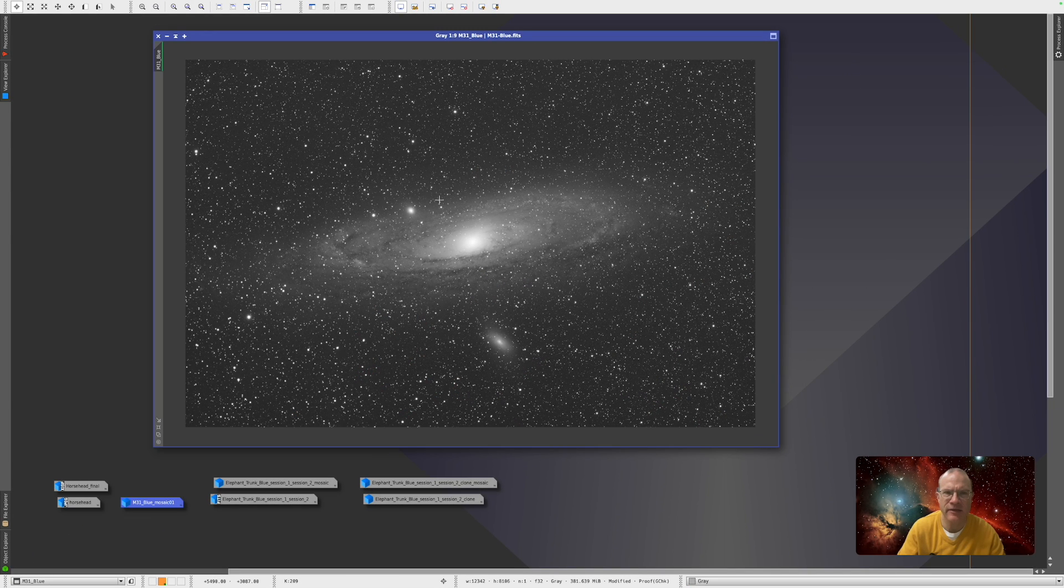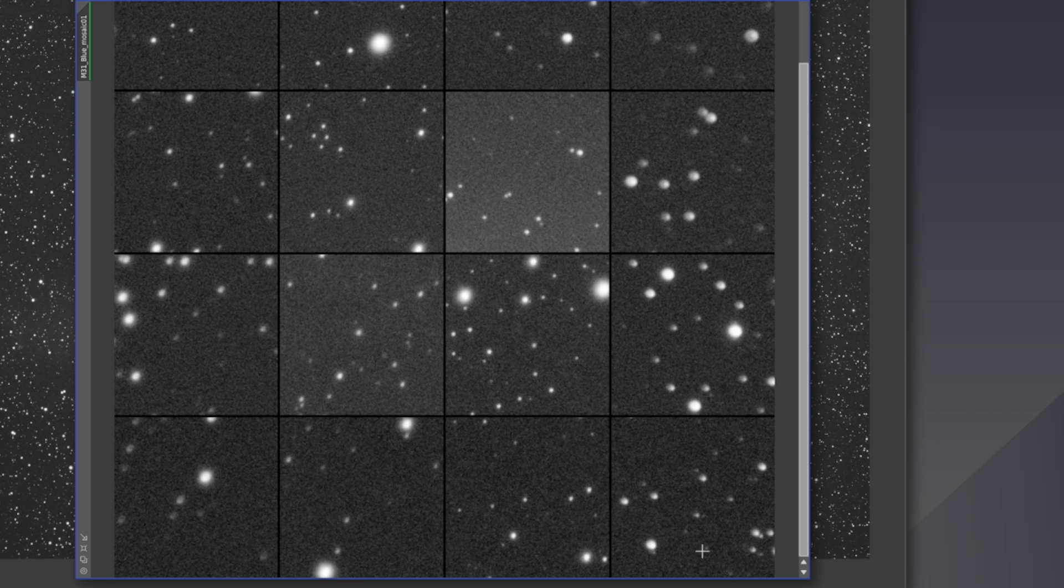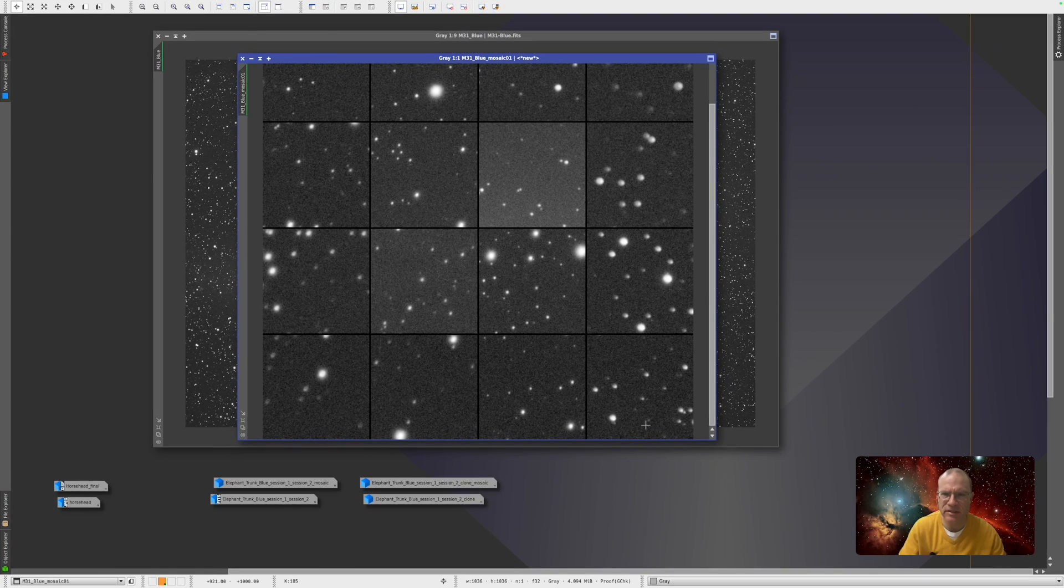Next, we want to have a look here at Andromeda. This is just the blue channel here. Nothing done, no BXT, nothing. So if you open this in the aberration inspector, these are the extremes. If you look here at the stars, they look really nice. They look round. There's a little bit of egginess here, but I think we can agree these are mostly round.